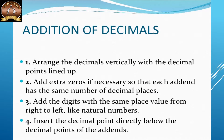For addition of decimals, we have to convert the given decimals into like decimals. Here are the key points to remember: first, arrange the decimals vertically with the decimal points lined up one below the other. Then fill any gaps by adding extra zeros if necessary, so that each addend has the same number of decimal places. Add the digits with the same place value from right to left, like with rational numbers, and do the normal addition.